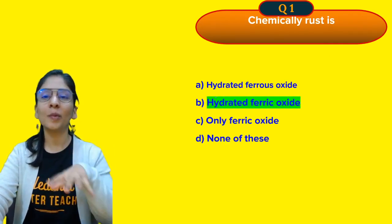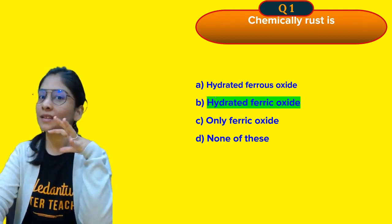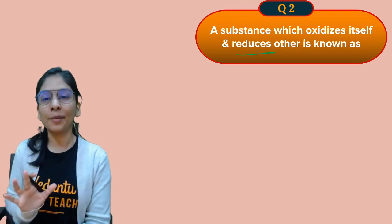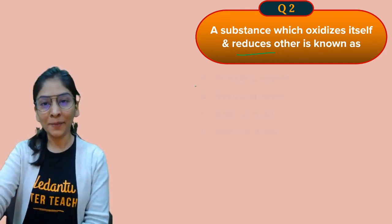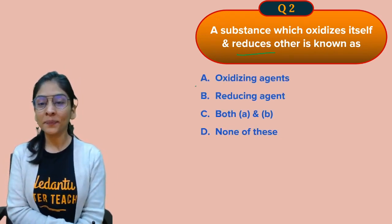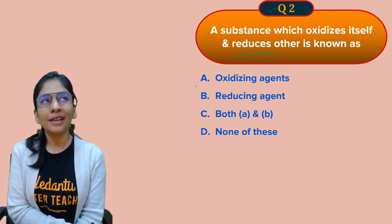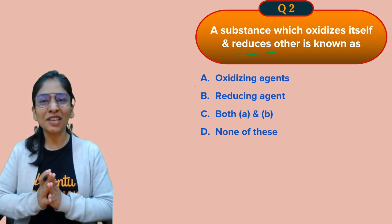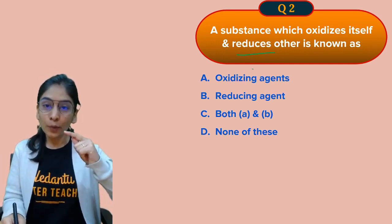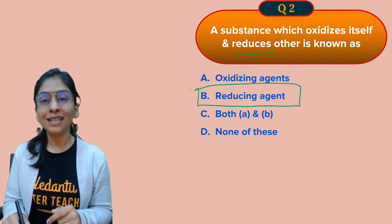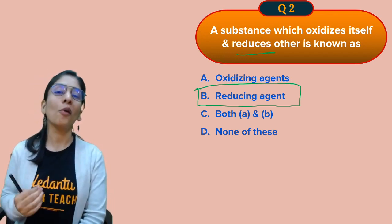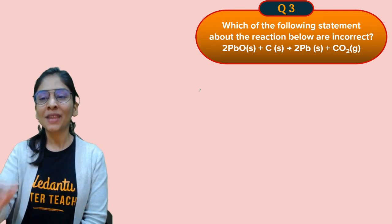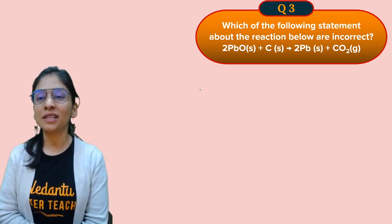Next question: A substance which oxidizes itself and reduces others — what is it? Options are oxidizing agent, reducing agent, both, or none. A substance that reduces the other substance will be a reducing agent. To reduce the other substance, it has to oxidize itself — it does the opposite job to itself. So the answer is reducing agent.